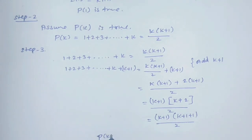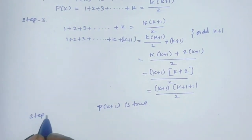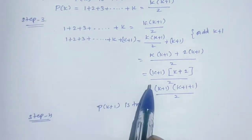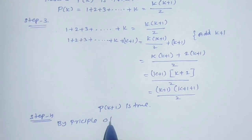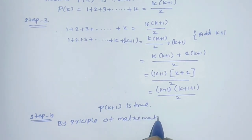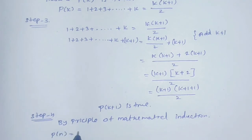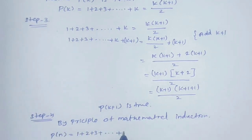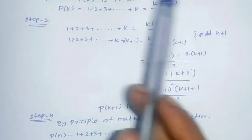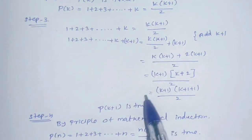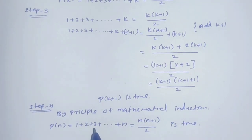Step 4: Conclusion. Since P(1) is true and P(k+1) is true whenever P(k) is true, by the principle of mathematical induction P(n) is true for all integers n ≥ 1. That is, 1+2+3+...+n = n(n+1)/2 is true for all n.